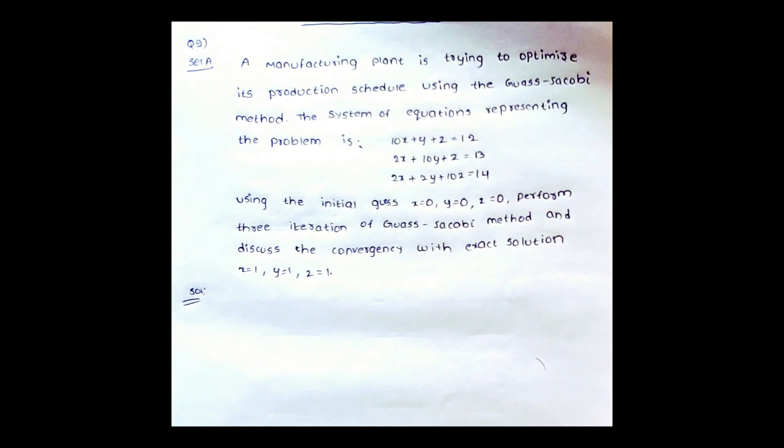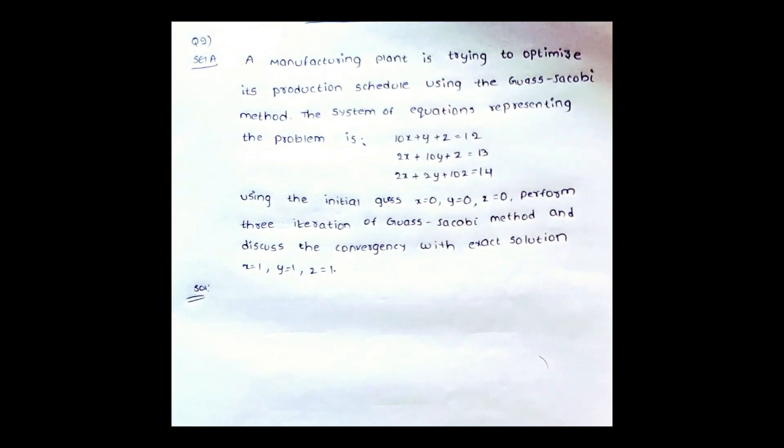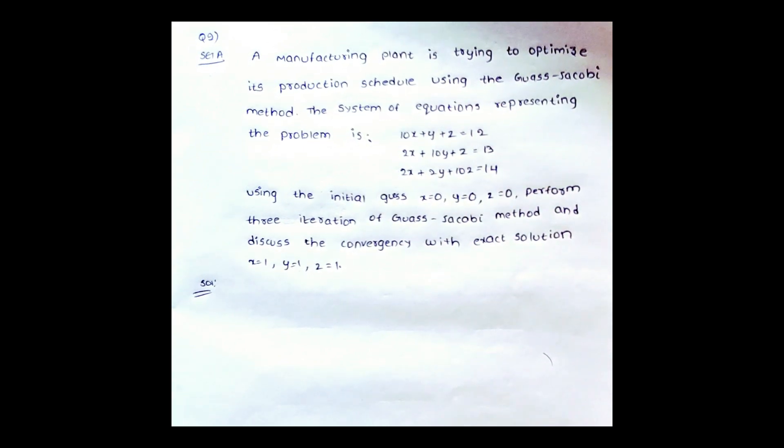Let us read the question. A manufacturing plant is trying to optimize its production schedule using the Gauss-Jacobi method. The system of equations representing the problem is: 10x + y + z = 12, 2x + 10y + z = 13, and 2x + 2y + 10z = 14.